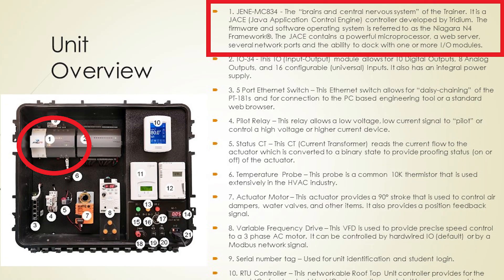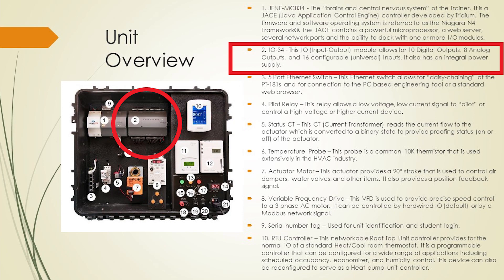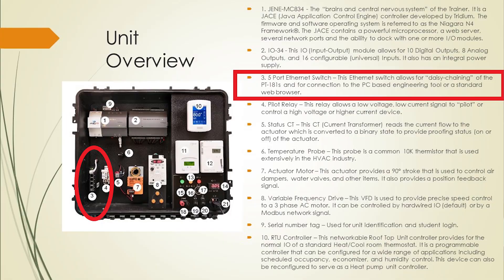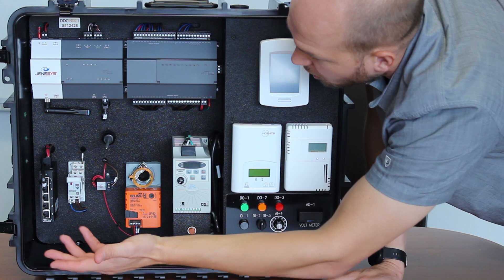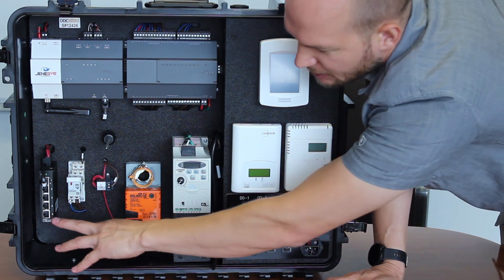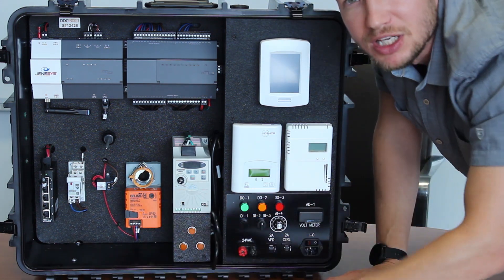You have your controller — this is a JACE, the JACE 8000 we talked about in previous videos, it's the microprocessor. Then you have the IO input/output module, which allows 10 digital outputs, 8 analog outputs, and 16 configurable inputs. You also have an Ethernet port switch — this is where you plug in the computer to access the system, or you could plug directly into the JACE.